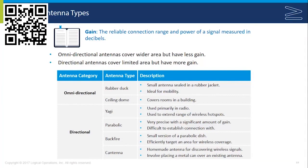The Cantenna is a homemade directional antenna that can extend wireless networks. It started out as a Pringles can — a metal can placed over an existing antenna — and it's meant to discover wireless signals and increase their gain.